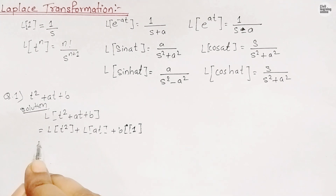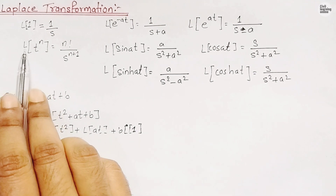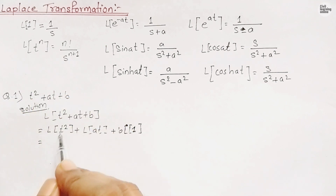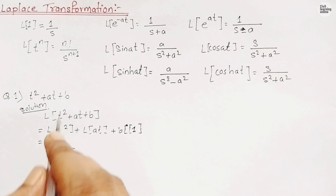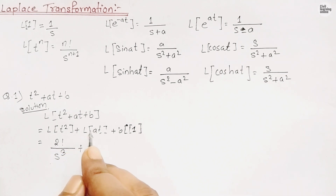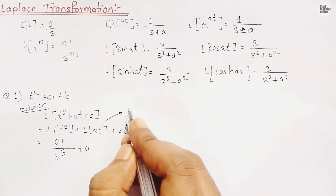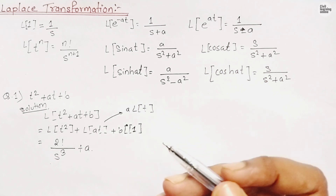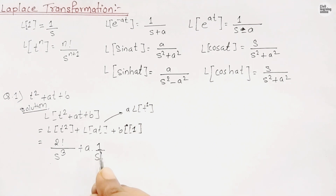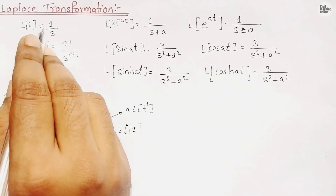Now, L{t²}: using the formula L{t^n} = n!/s^(n+1), here n=2, so we get 2!/s³. Then, a is a constant, so we bring it out: a·L{t} = a·(1!/s²) = a·(1/s²). Here 1 factorial is 1, so this gives a/s².